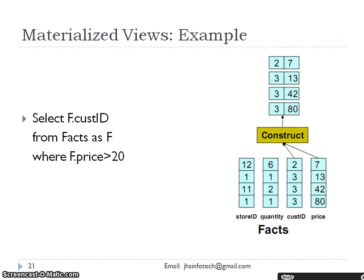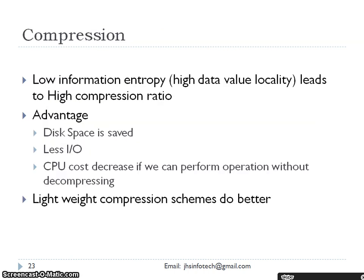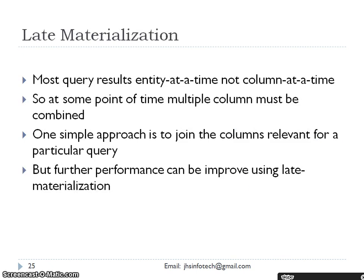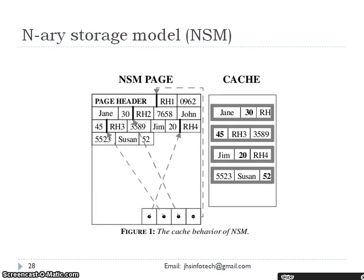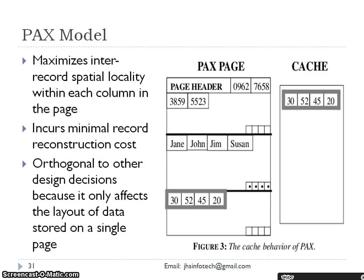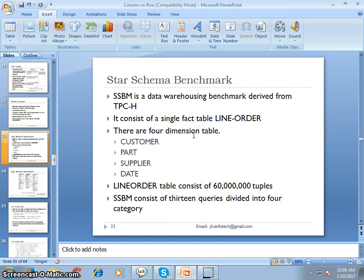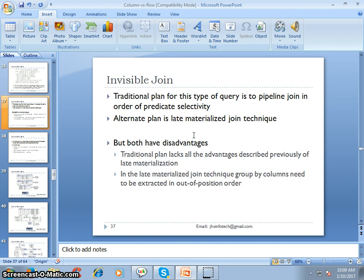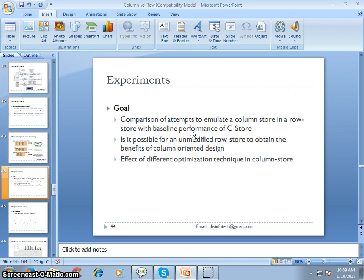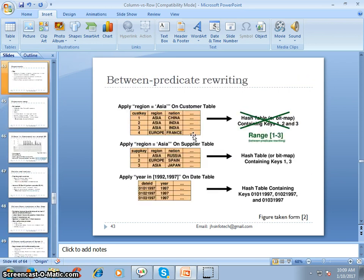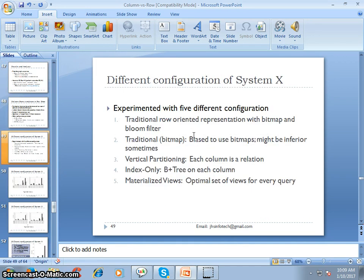These are the different models for fact models and star schema benchmarks with invisible joins. What I discussed related to column storage and row storage is more than enough to understand the concept of how column and row storage works in SAP HANA.